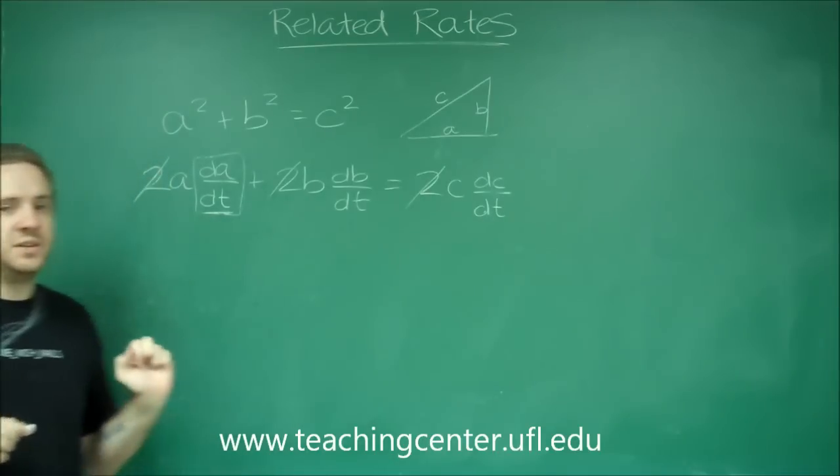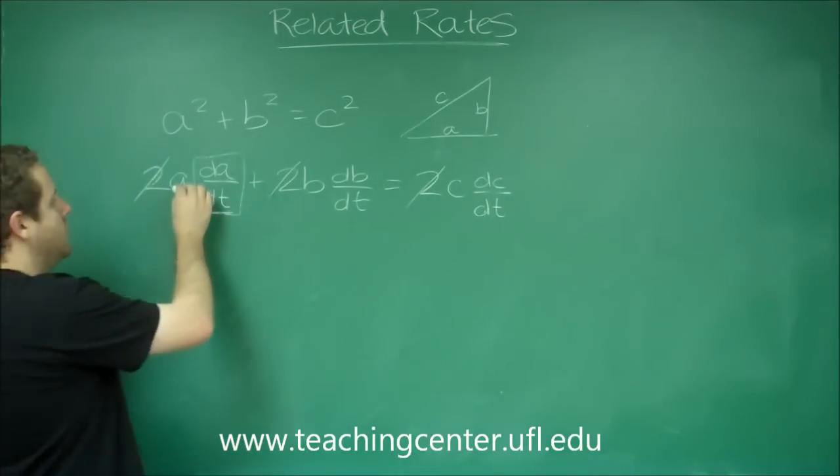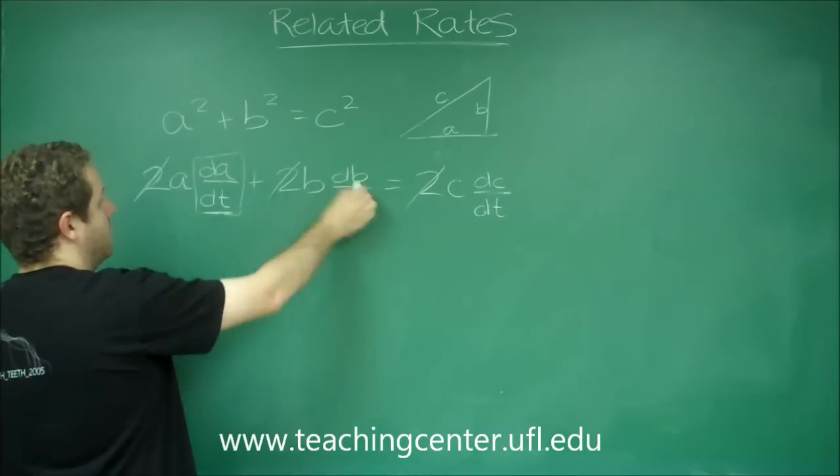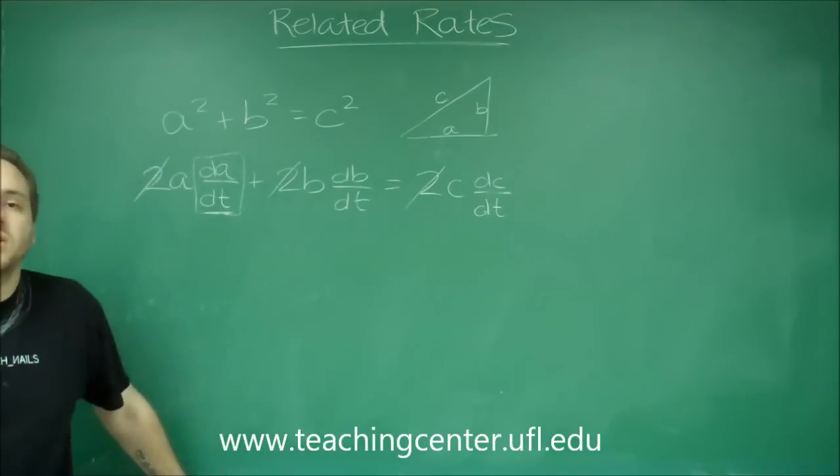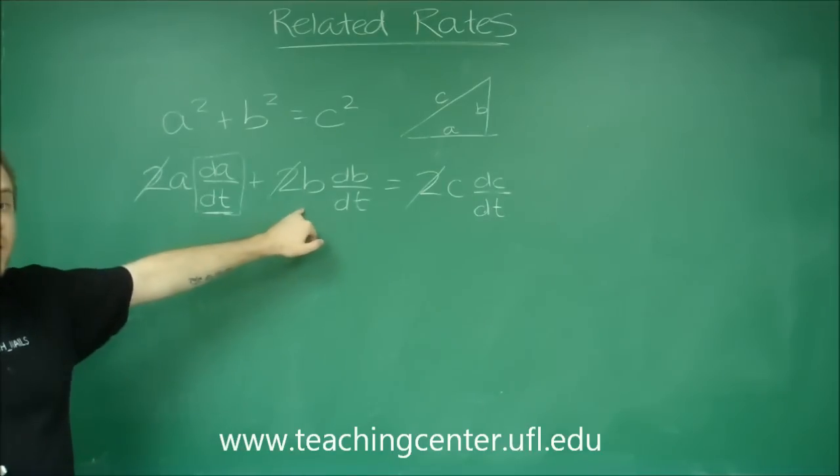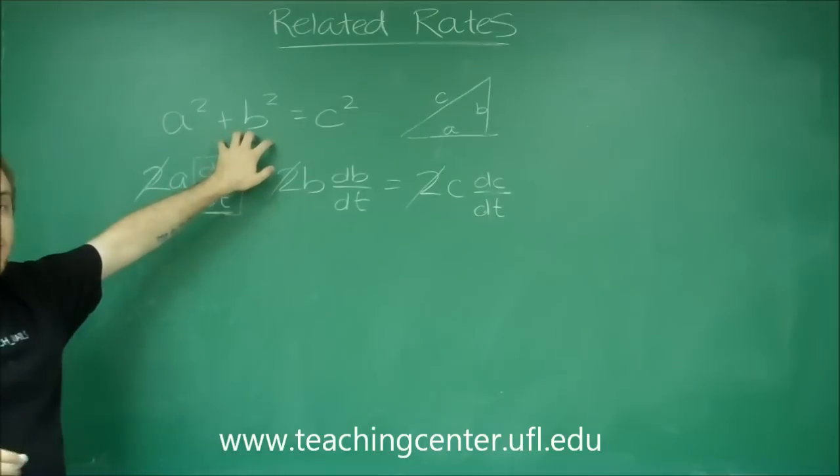You can see here if you knew A and B and their rates you could certainly solve this equation because by knowing A and B you can get C from using this.